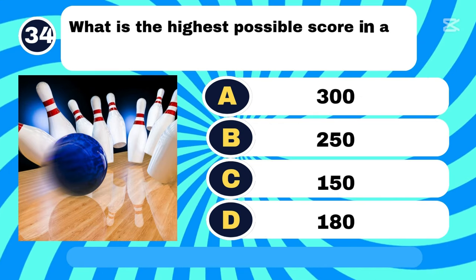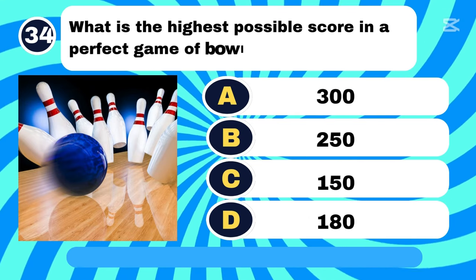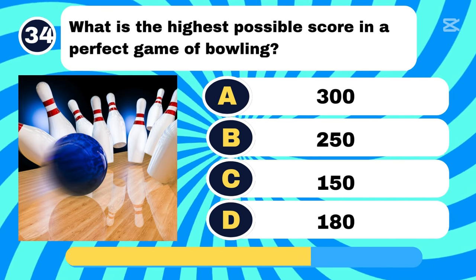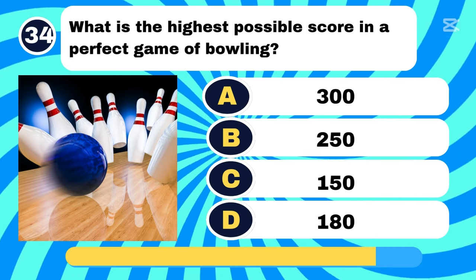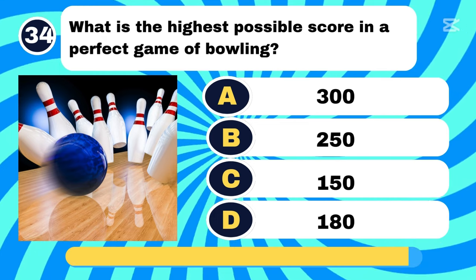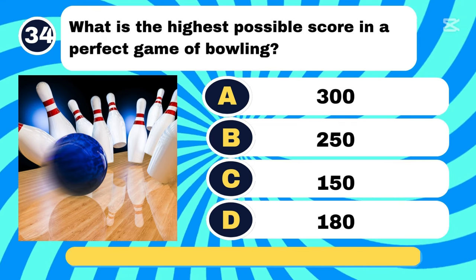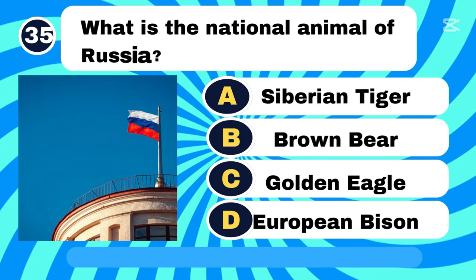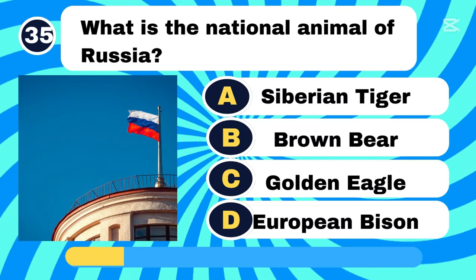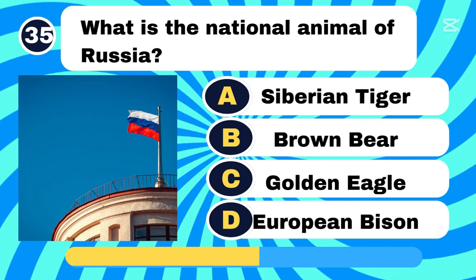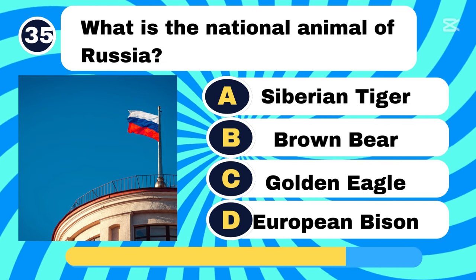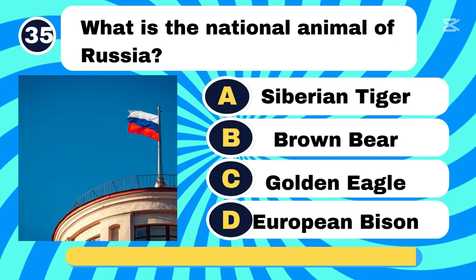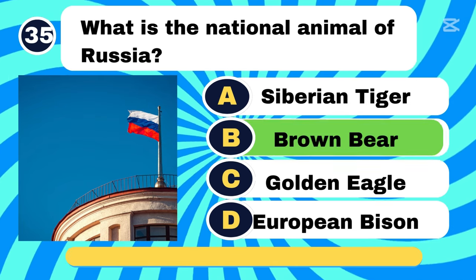What is the highest possible score in a perfect game of bowling? Letter A. What is the national animal of Russia? Letter B, Brown Bear.